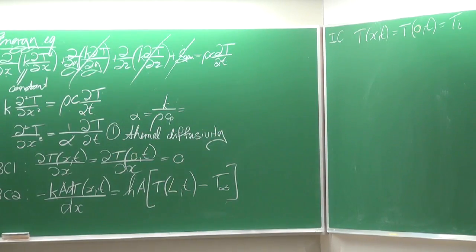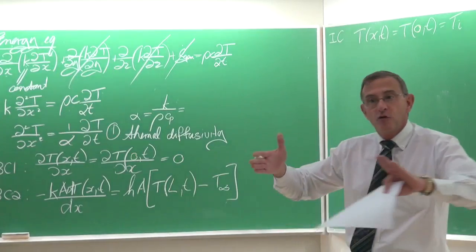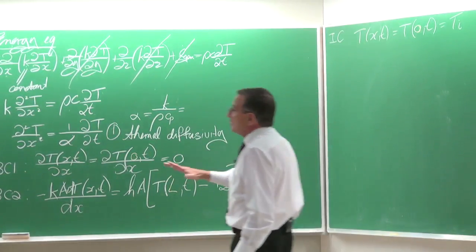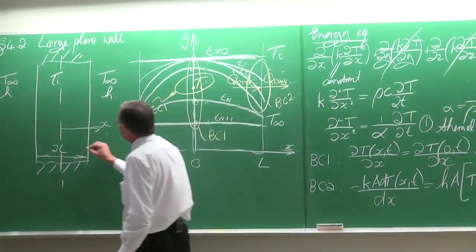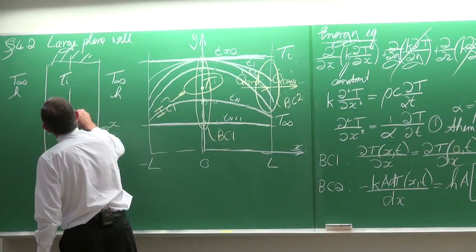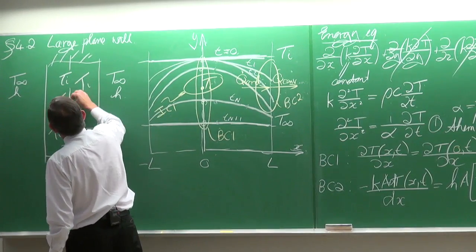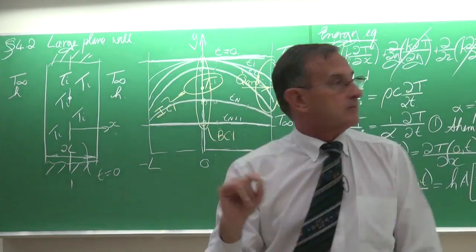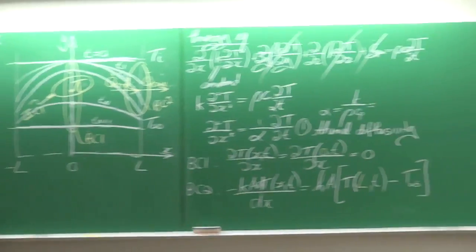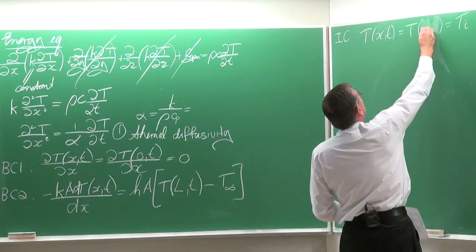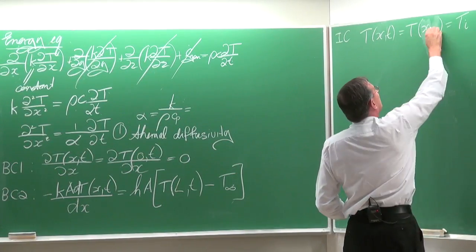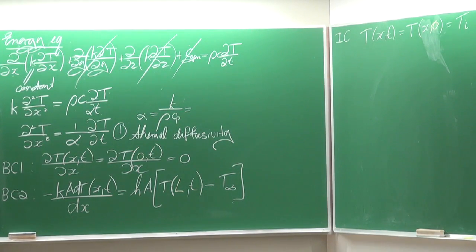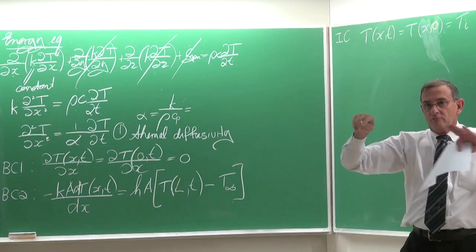A student asks: is the Ti the same as the one we started with? Yes — Ti is a uniform temperature at the beginning. So when t equals zero, the temperature everywhere is equal to Ti, including at the center. When time is zero, the temperature equals Ti at all x values.